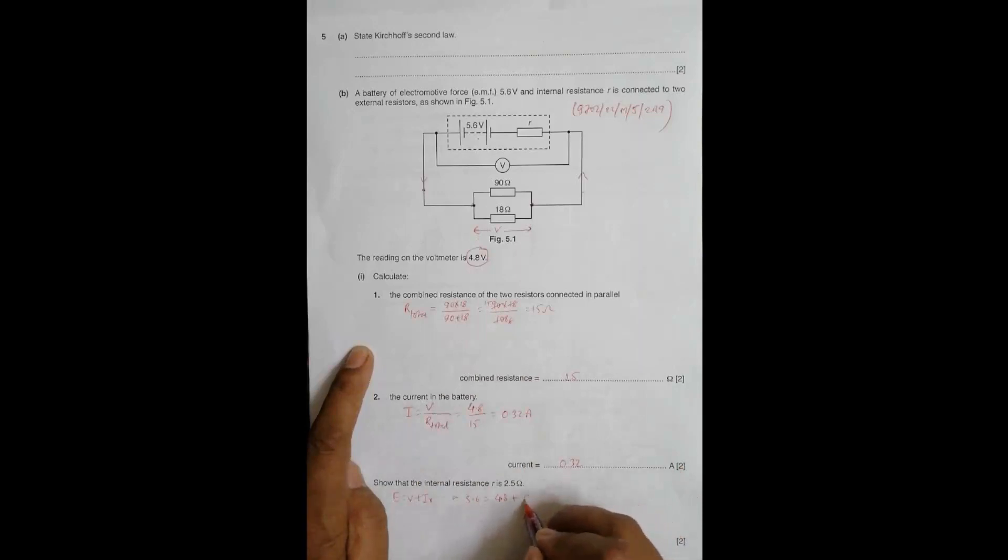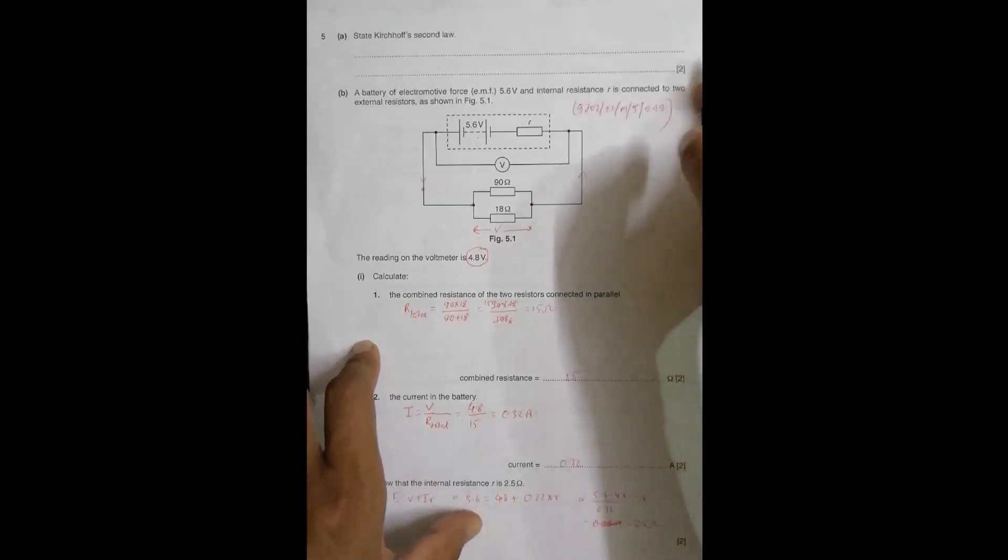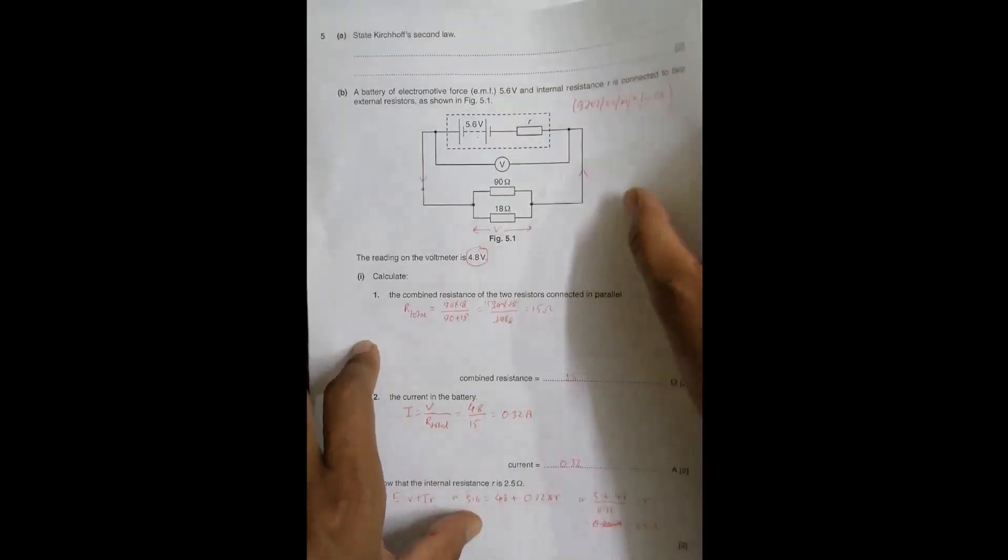Manipulating this equation gives us: 5.6 minus 4.8 divided by 0.32 equals small r. When we do the calculations, the value of small r becomes equal to 2.5 ohms.